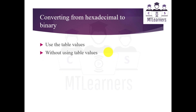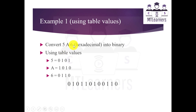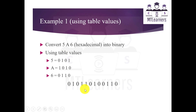Now let's move to converting numbers from hexadecimal to binary. You can use both methods: table values or without the table. Using table values, convert hexadecimal 5A6 into binary. From the table: 5 is equal to 0101, A is equal to 1010, and 6 is equal to 0110. You simply place all the 4 bits for 5, then for A, then for 6 in sequence to complete the binary number, which is equivalent to 5A6.